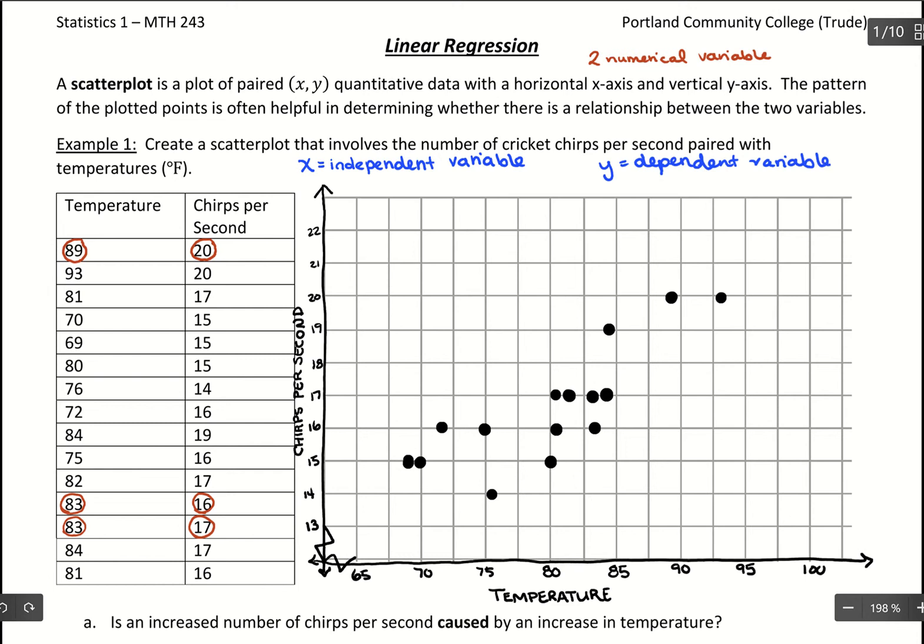If you remember from algebra, x is considered our independent variable - it just kind of works on its own. There isn't really anything changing it. And then y is considered the dependent variable. We think about which operates on its own and which could be responding to the other variable. We could try out the different wording: Is temperature responding to chirps per second? That would be like the crickets are chirping 16 times per second, so it has to be 83 degrees outside - which probably isn't the order in which it works. If we said chirps per second depend on the temperature outside, that's a more likely outcome.